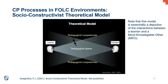Slide nine talks about Desjardins' socio-constructivist theoretical model. This graphic examines the idea of the more knowledgeable other — called here the assistant — assisting the learner to create new knowledge at the boundary of the pedagogical space, the zone of proximal development, and pushing and challenging the learner to move to that interface between what they can do with the assistance of an MKO or assistant, and what they cannot do. You're constantly moving that upper boundary, highlighted by the double-headed opposing arrows in this diagram.